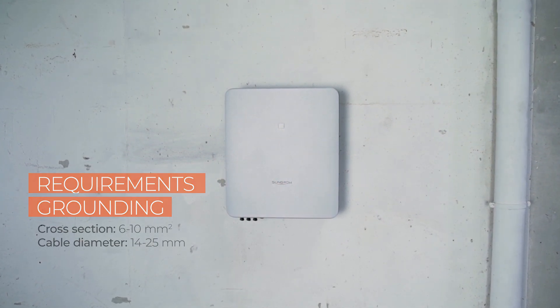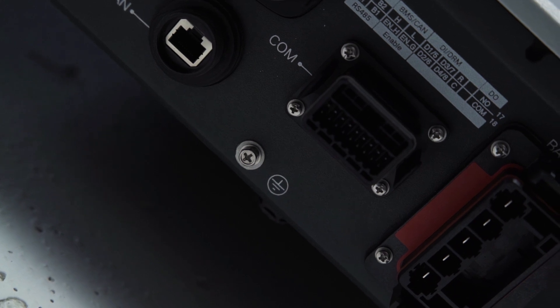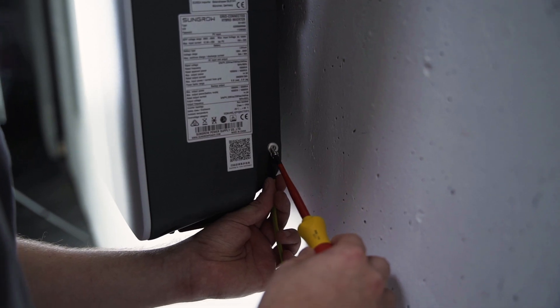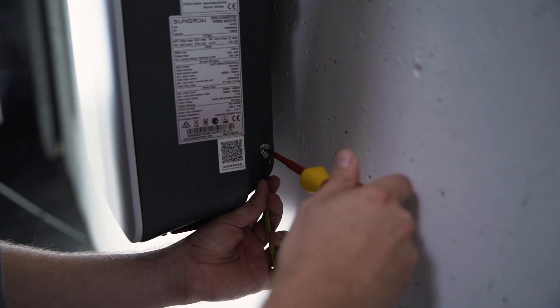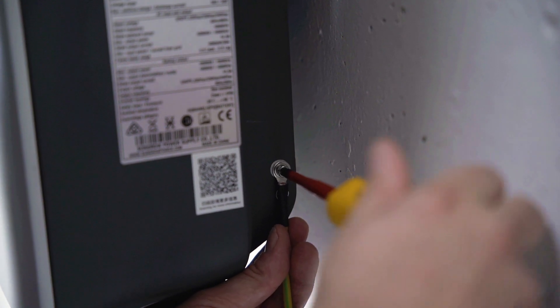In the first step you have to connect the inverter to ground. There are two PE connections, one at the bottom and one on the right side of the inverter. At least one of them has to be connected to the general grounding of the house.